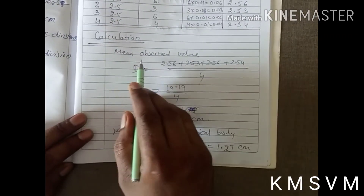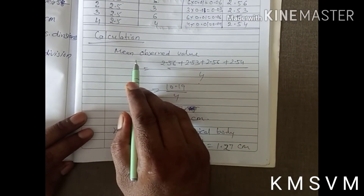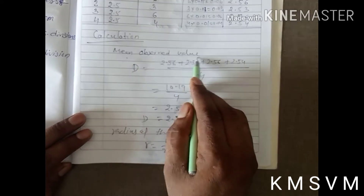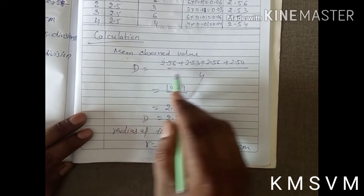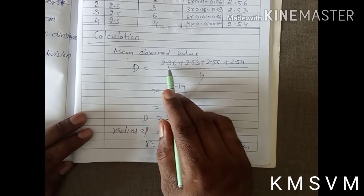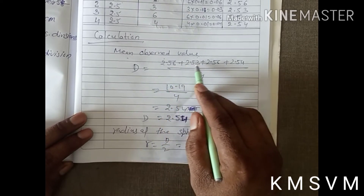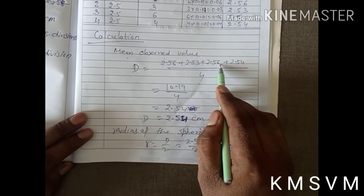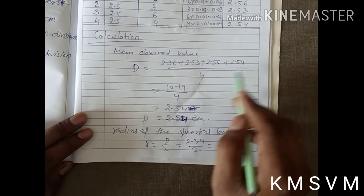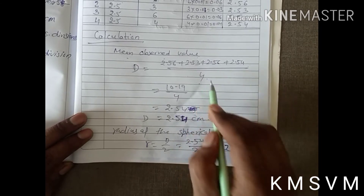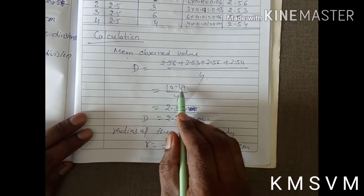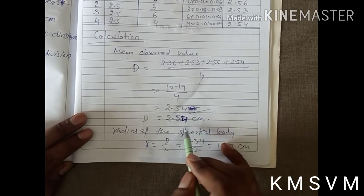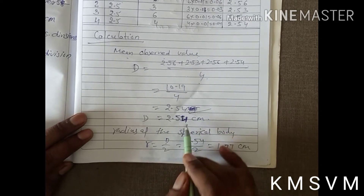Now finding the mean of the observed values: D = (2.56 + 2.53 + 2.56 + 2.54) / 4 = 10.19 / 4 = 2.54 centimeters.